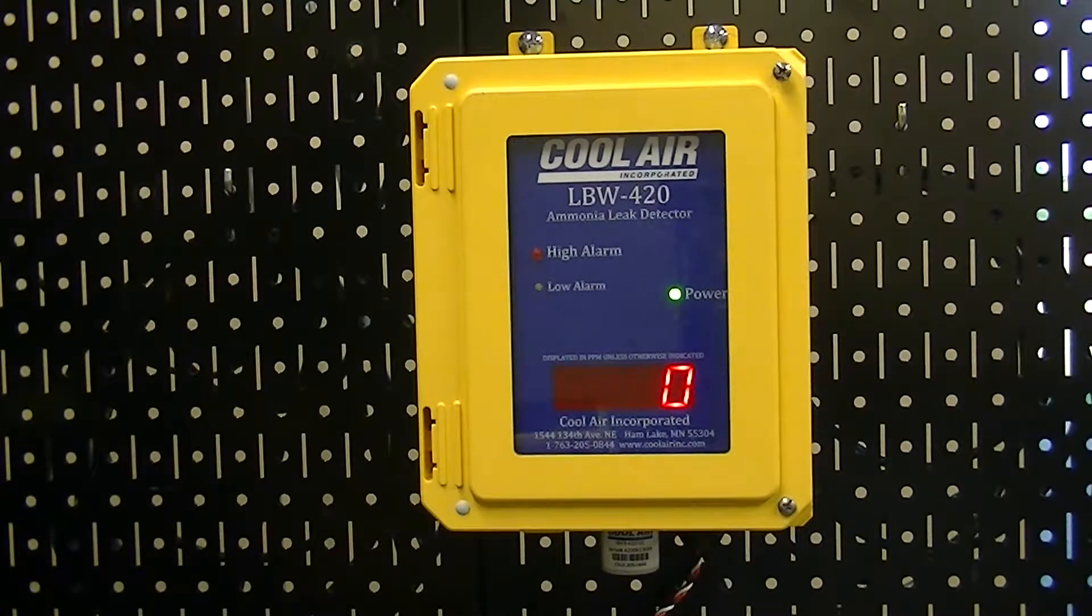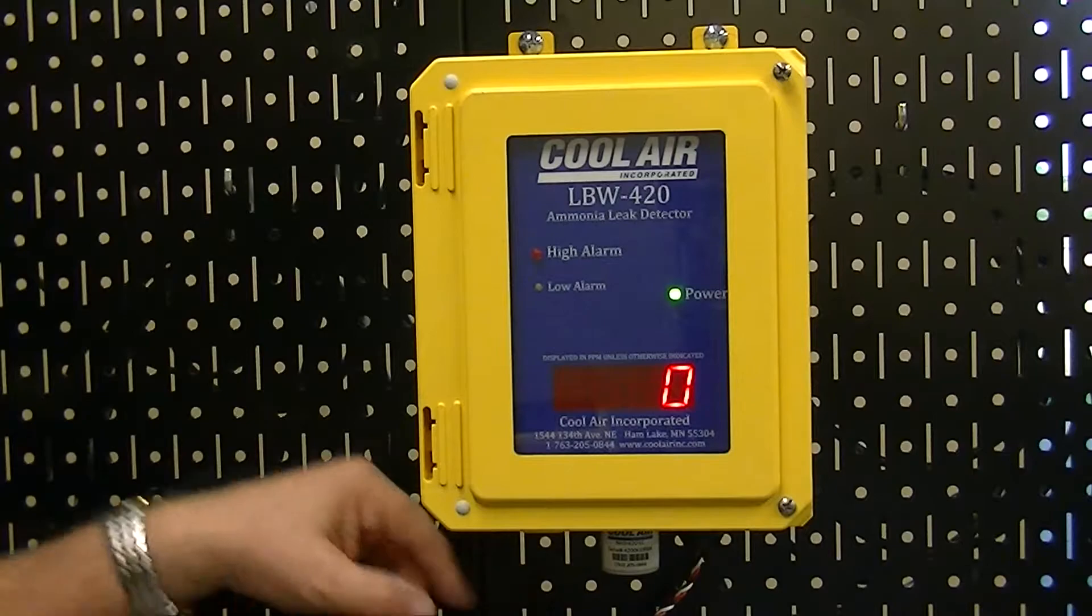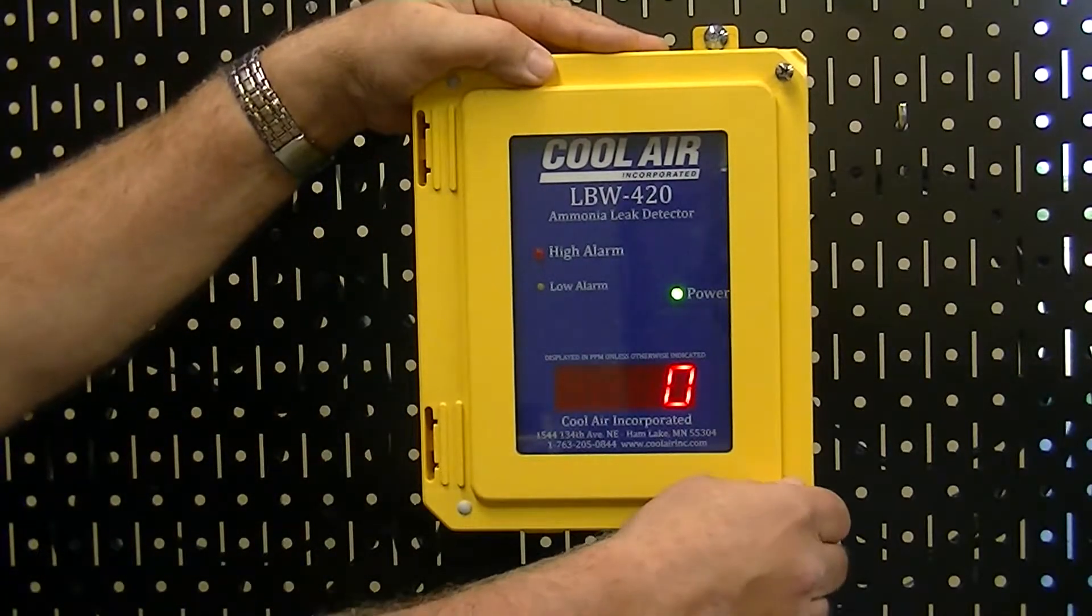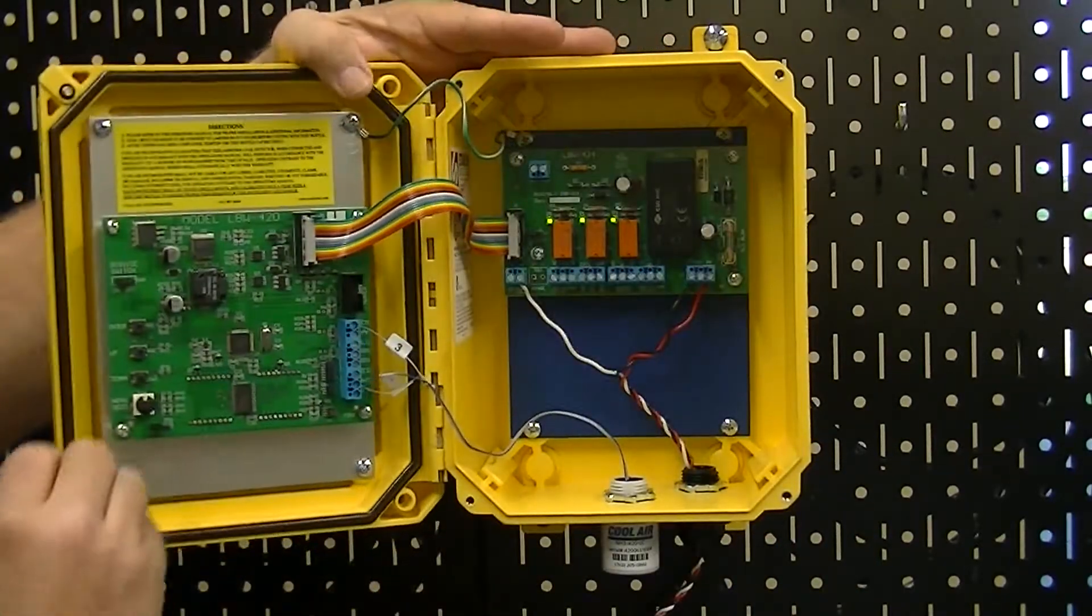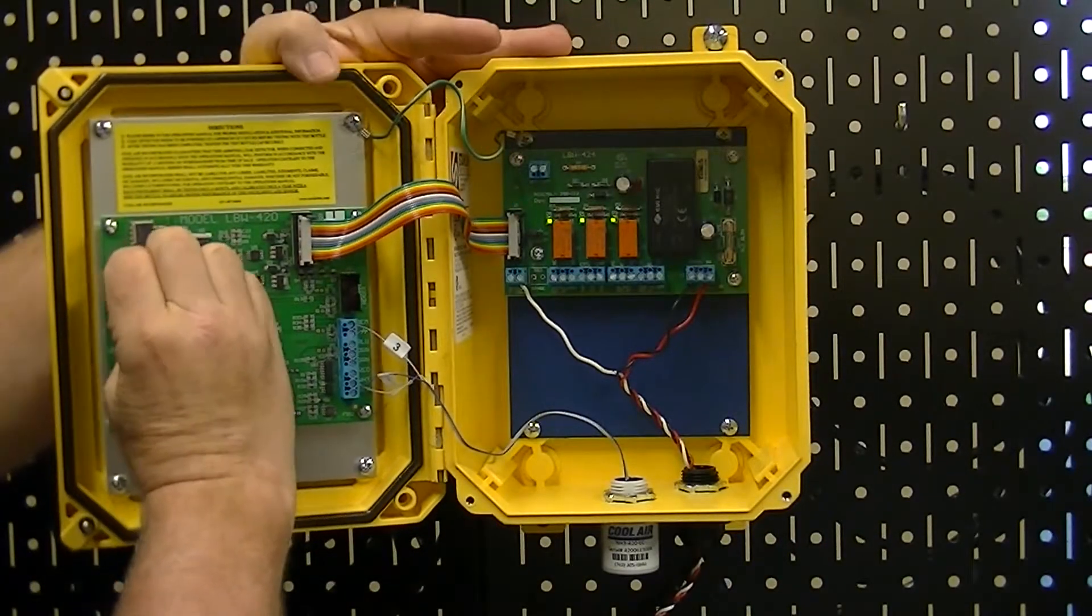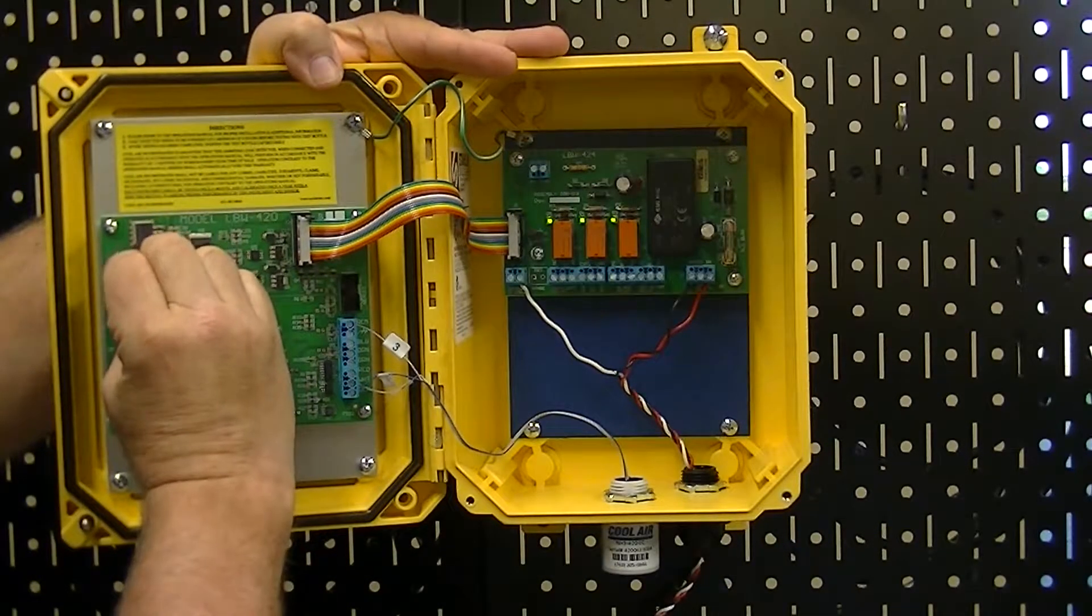Calibrating the LBW420 with the electrochemical sensor. First thing you want to do when calibrating any of the detectors is open them up, put them in service mode by moving the jumper to the on position.